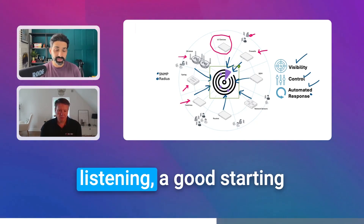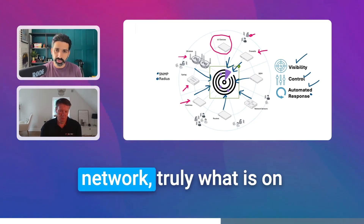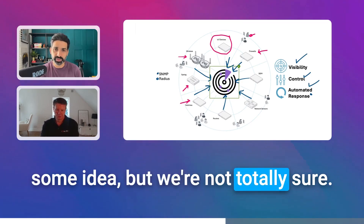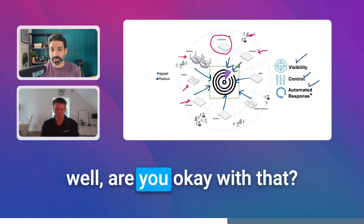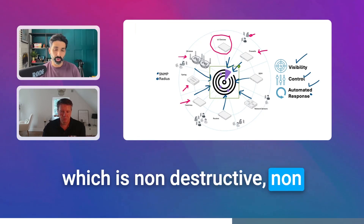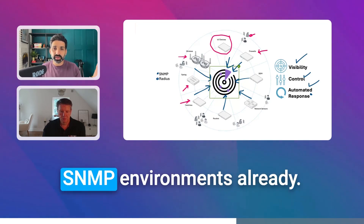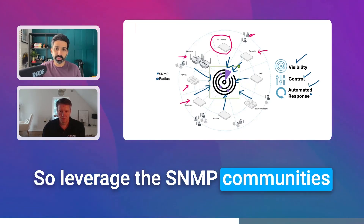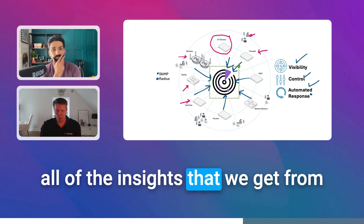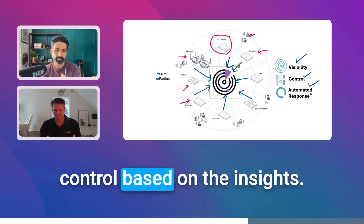If there are any account teams listening, a good starting place is to ask partners and end customers: do you truly know what is on your network end to end? Likely the answer will be, well, we have some idea, but we're not totally sure. And the follow-up is: are you okay with that? We can implement FortiNAC in an invisible mode — non-destructive, non-intrusive to the existing network. Chances are many organizations are already running SNMP environments. So leverage the SNMP communities already configured. We start with the visibility phase, and all the insights we get from that non-intrusive step take us to the next phase: access control based on those insights.